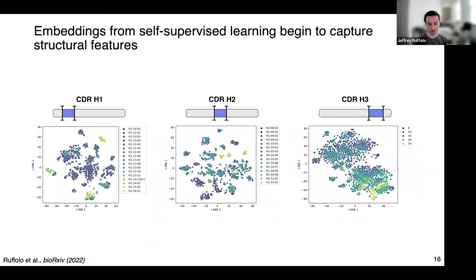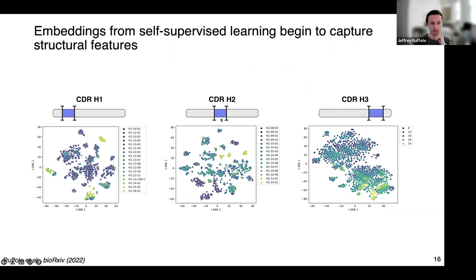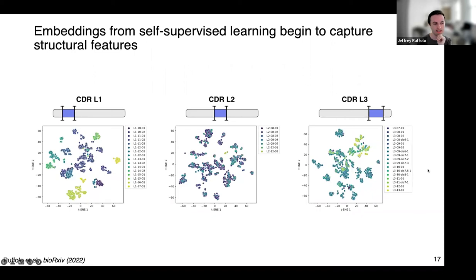We also looked at whether the embeddings have learned something about structure from pretraining. Taking sequences of all paired antibodies in SABDAB, encoding them, and extracting the representation corresponding to CDR loops, we project down to two dimensions with t-SNE. For CDRH1 and H2, we see clustering according to structural canonical folds that researchers have previously identified. For H3, we instead visualize by length and see the space organized by CDRH3 loop length. Similar trends appear for light chain CDR loops. The model seems to have picked up structural information about canonical folds through the pretraining task.